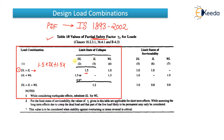IL stands for imposed load, which is also known as live load. In IS 1893:2002 they have written it as IL. So in limit state of collapse, if you are designing for the limit state of collapse, you have to multiply the dead load by 1.5 and the imposed load also by 1.5.